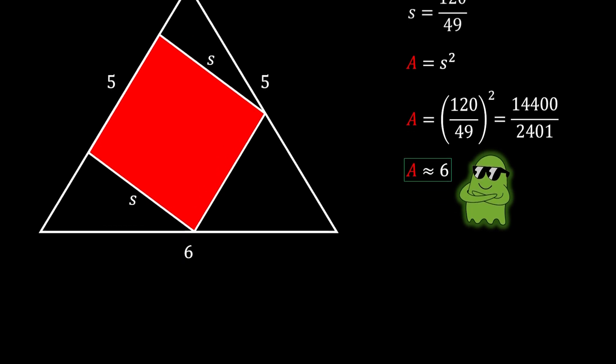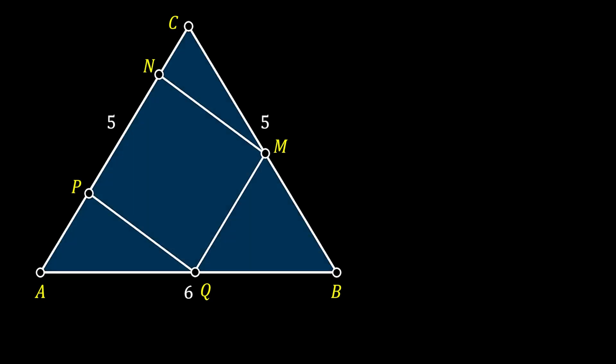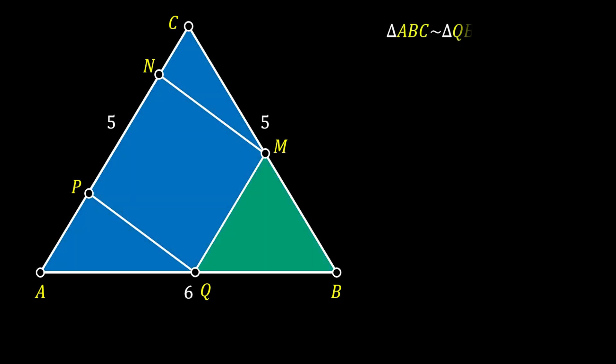Now let me show you the second method, which is also a geometry method, but we will use some facts from our previous method. First, we label the vertices of our triangle again as A, B, and C, and the vertices of our square as P, Q, M, N. We use the fact already proven that triangle ABC is similar to triangle QBM. Since triangle ABC has sides of 5, 5, and 6, triangle QBM will have sides of 5K, 5K, and 6K, where K is the factor of similarity.